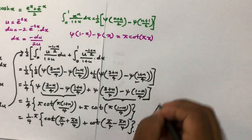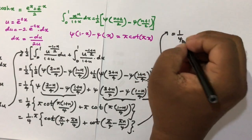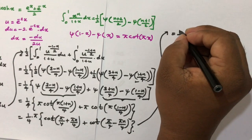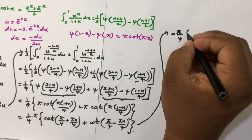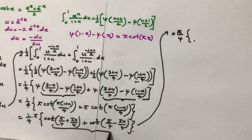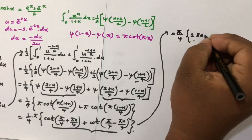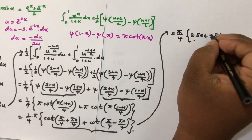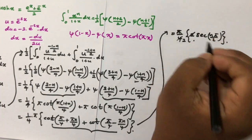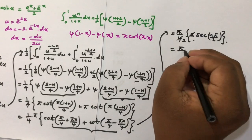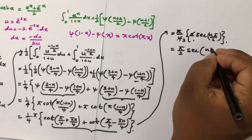Simplifying the trigonometric expression, (π/4)·[cot(π/4 + πn/4) + cot(π/4 - πn/4)] equals (π/4)·2·sec(nπ/2). The factor of 2 cancels with the 4 in the denominator, giving π/2 · sec(nπ/2).